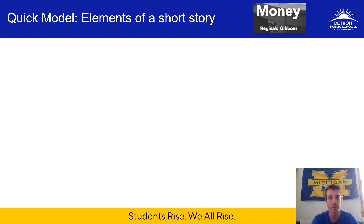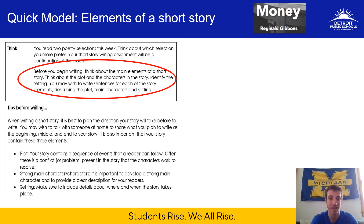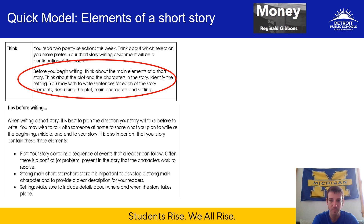The quick model today is going to be around the elements of a short story. Going back to the think portion of the lesson, before you begin writing, think about the main elements of a short story — the plot and the characters, and identify the setting. You may wish to write sentences for each story element describing the plot, main characters, and setting. I'm going to model the plot, main characters, and setting for both The Good Life and Money to give you examples of what each element looks like.